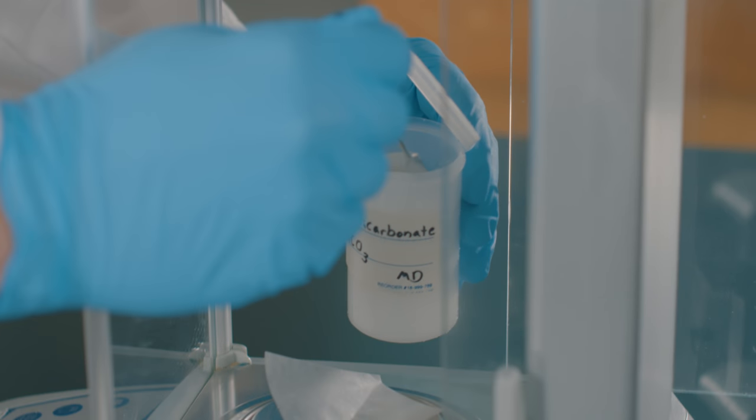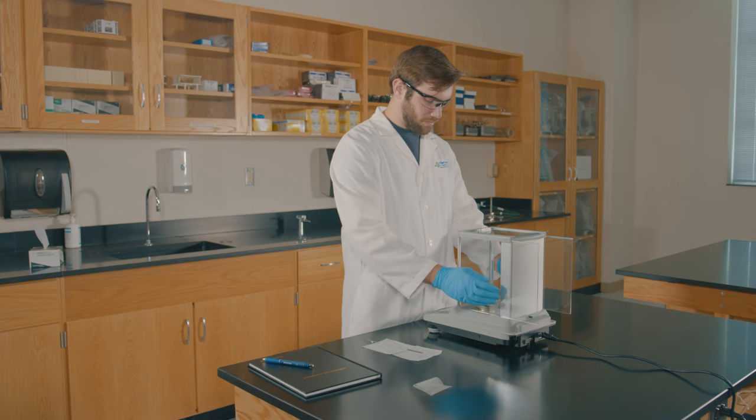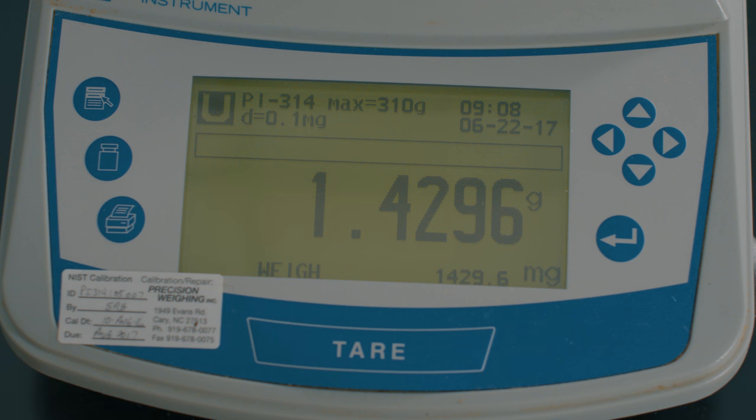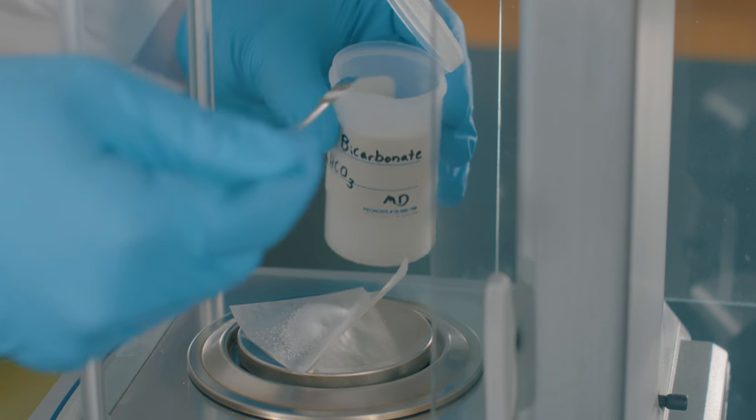Use a lab scoop to slowly add the sodium bicarbonate to the paper. Close the glass doors and wait for the balance to lock in its reading. Continue adding sodium bicarbonate until you reach 1.5 grams.